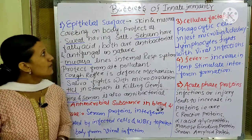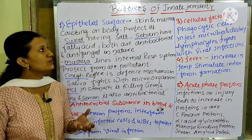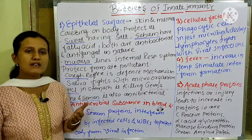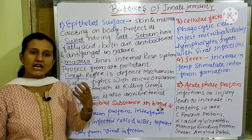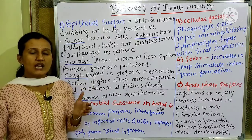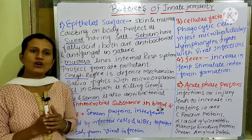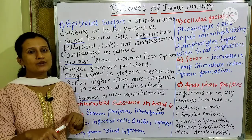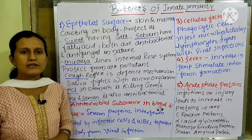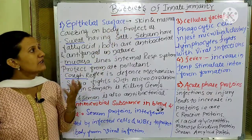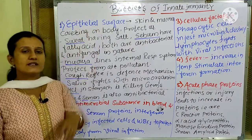Today we will see the barriers of innate immunity — what are the factors and criteria related to innate immunity. The first factor or barrier of innate immunity: a barrier means the mediator which carries or helps raise innate immunity, which participates in innate immunity. Those factors are called barriers. The first barrier is epithelial surfaces.